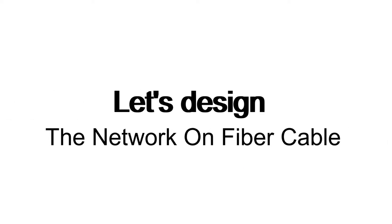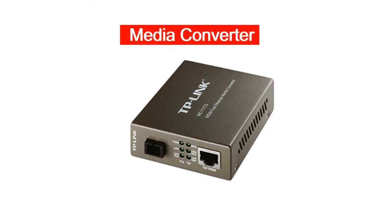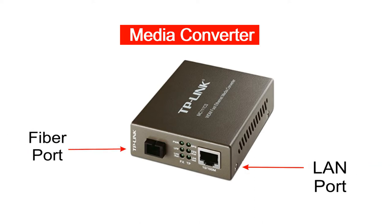First, we review the components that will be used to create the fiber network. The very first in the list is the media converter. A media converter converts electrical signals used in CAT6 copper cables into light waves for optical fiber cable transmission. It has two ports: a LAN port and a fiber port. At the LAN port you can connect CAT6 cable, and on the fiber port you can connect fiber cable, and vice versa.